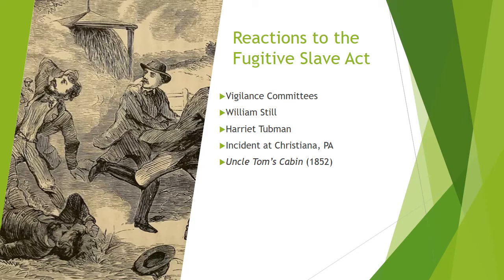Blood was shed over the question of the Fugitive Slave Act and people were willing to exercise civil disobedience — both white and Black — to protect these refugees from the South. Harriet Beecher Stowe's novel Uncle Tom's Cabin, published in 1852, graphically portrayed slavery's devastating effects on families, encouraging empathy with the victims of slavery to increase support for abolition. Fugitives play a large role in Uncle Tom's Cabin.